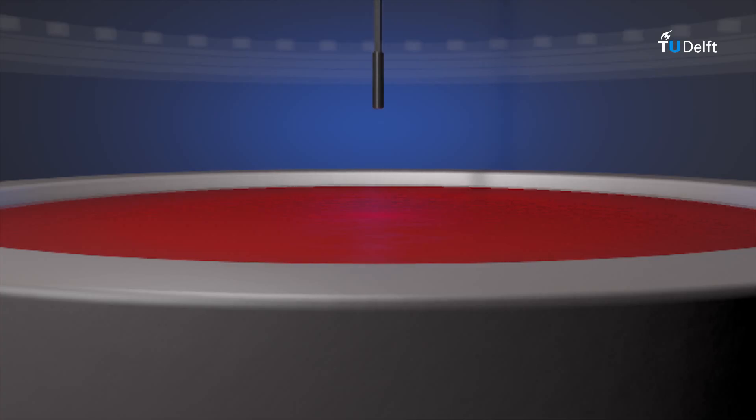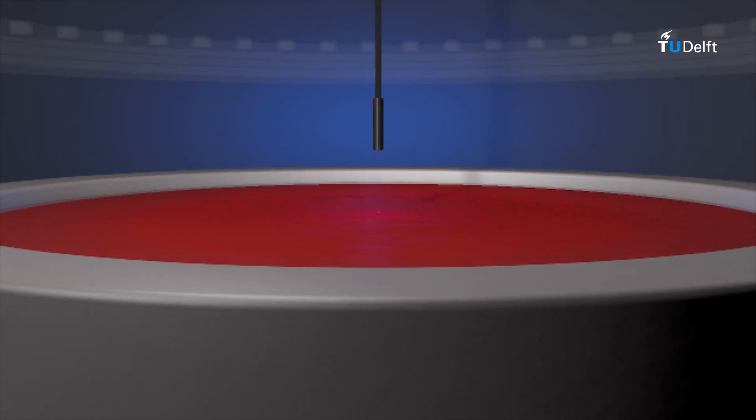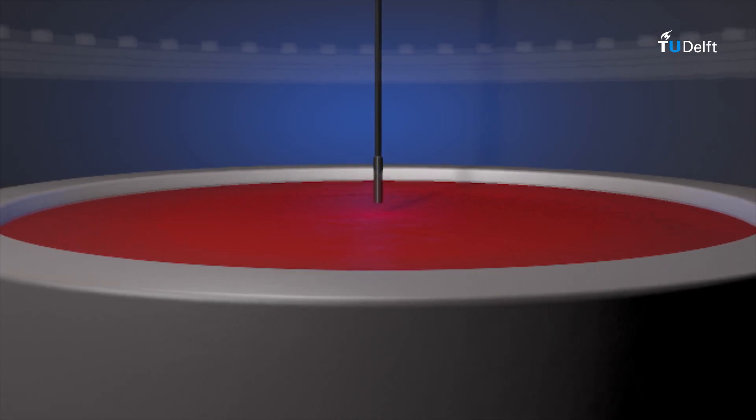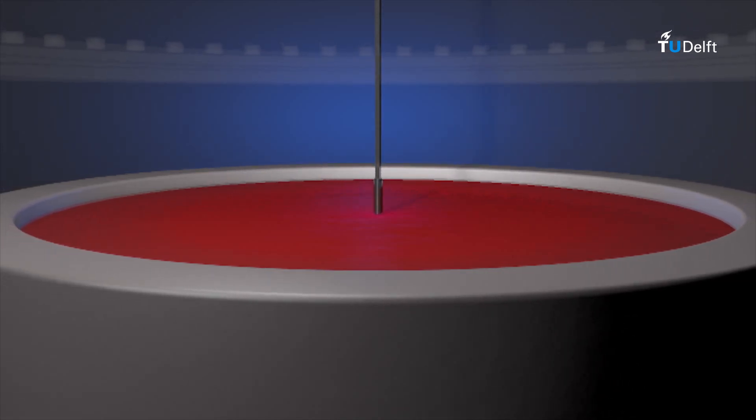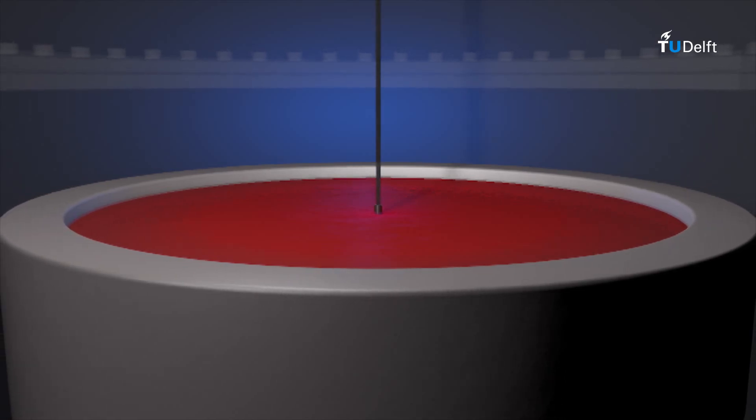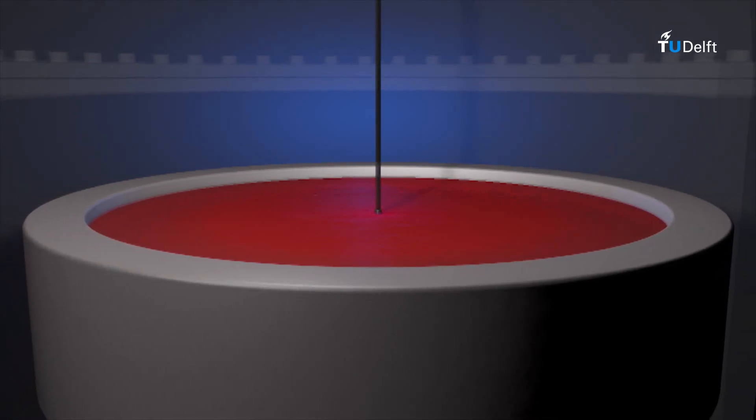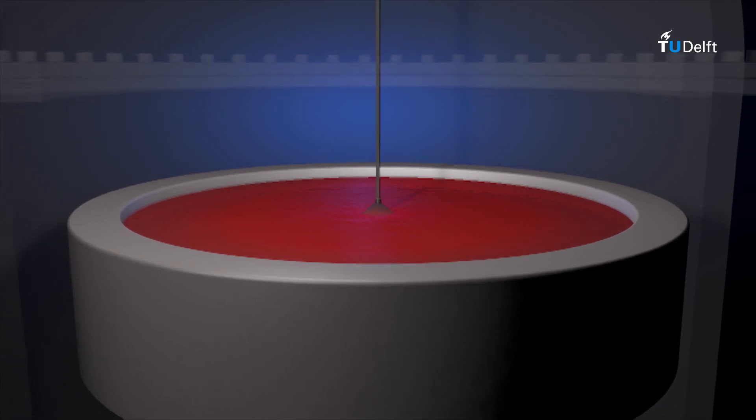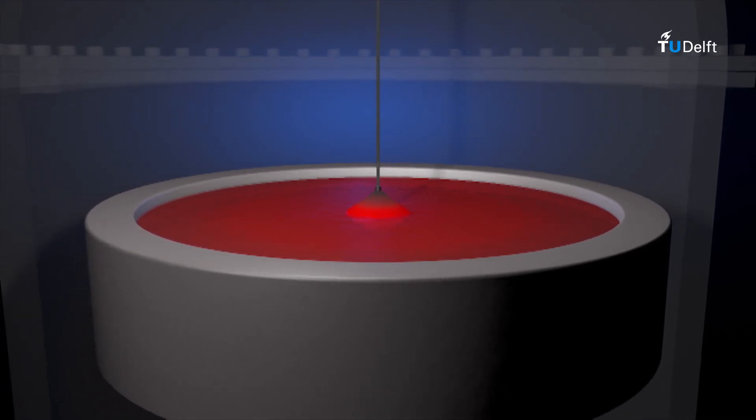Let's start with the Czochralski method, as developed by Polish scientist Jan Czochralski in 1918. It is a method to grow single crystal silicon. In this method, highly purified silicon is melted in a crucible at typical temperatures of 1500 degrees Celsius. Intentionally, boron or phosphorous can be added to make p-doped or n-doped silicon respectively.